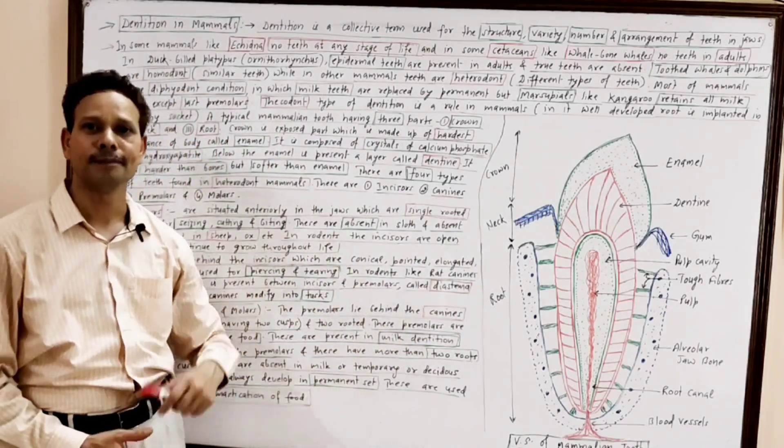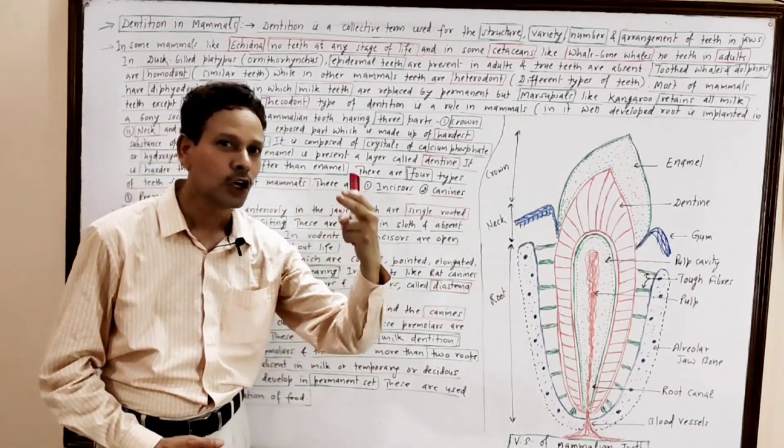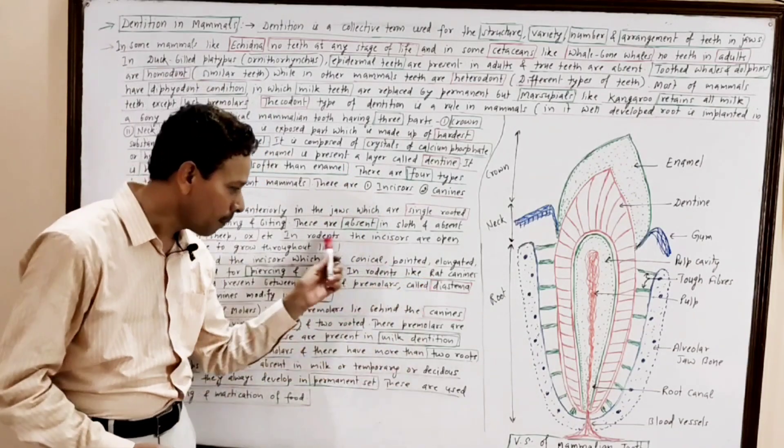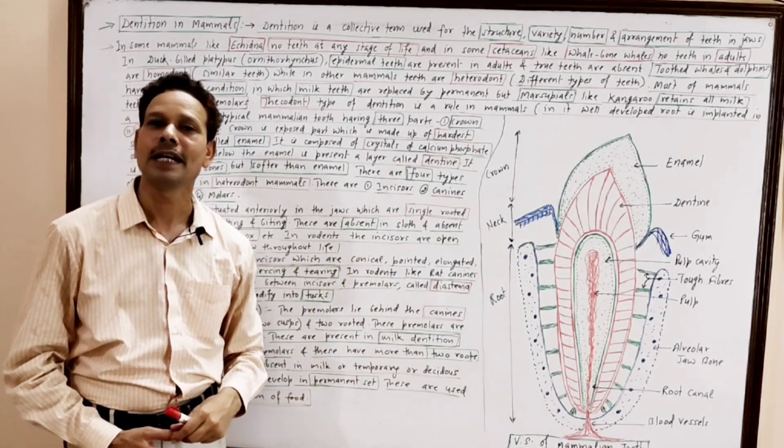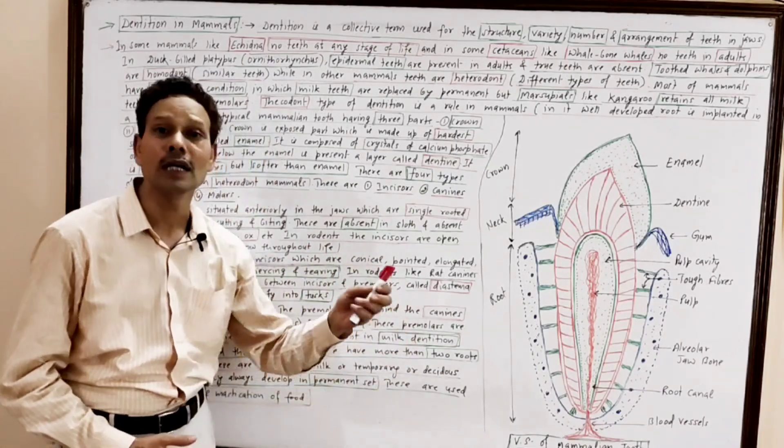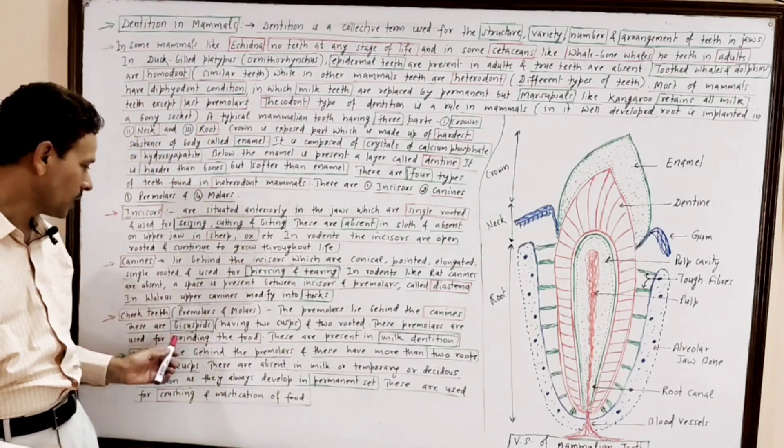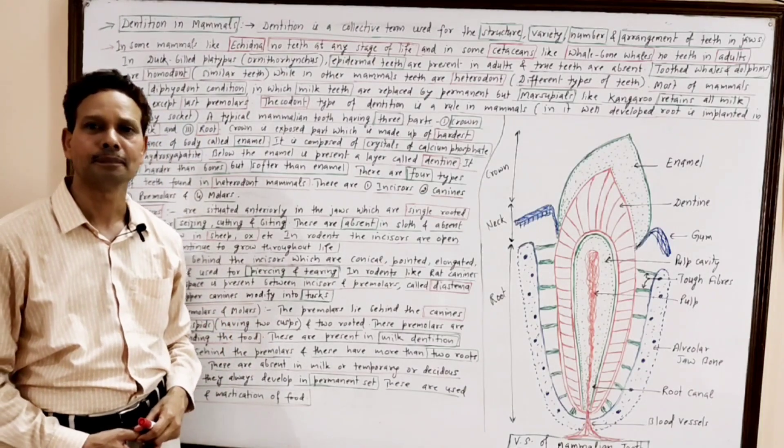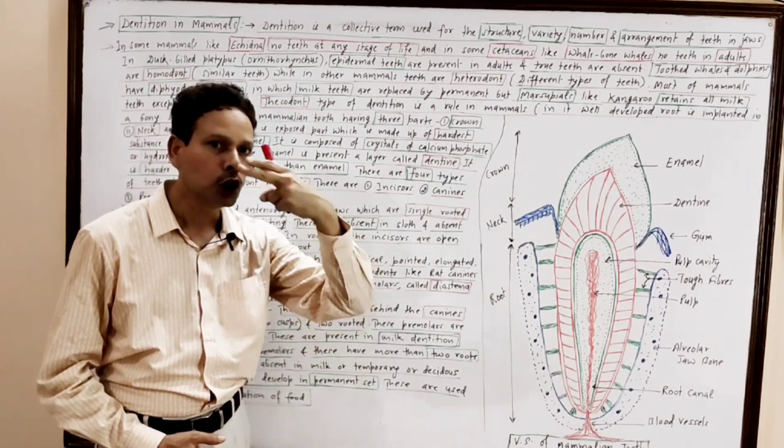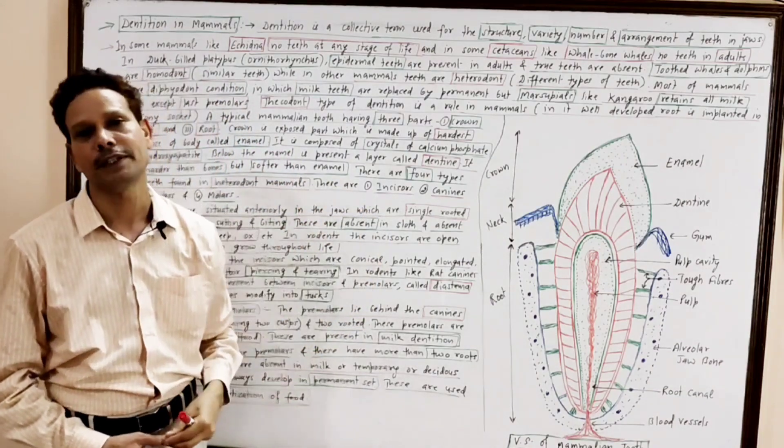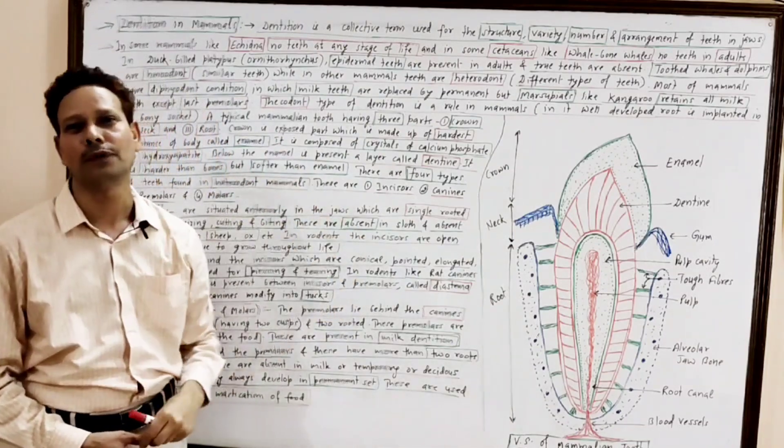The premolars always develop in milk set. These are a part of temporary set. And these premolars are replaced by permanent set. These premolars, having two cusps and two roots, are two rooted and bicuspid. These are involved in mastication of food.